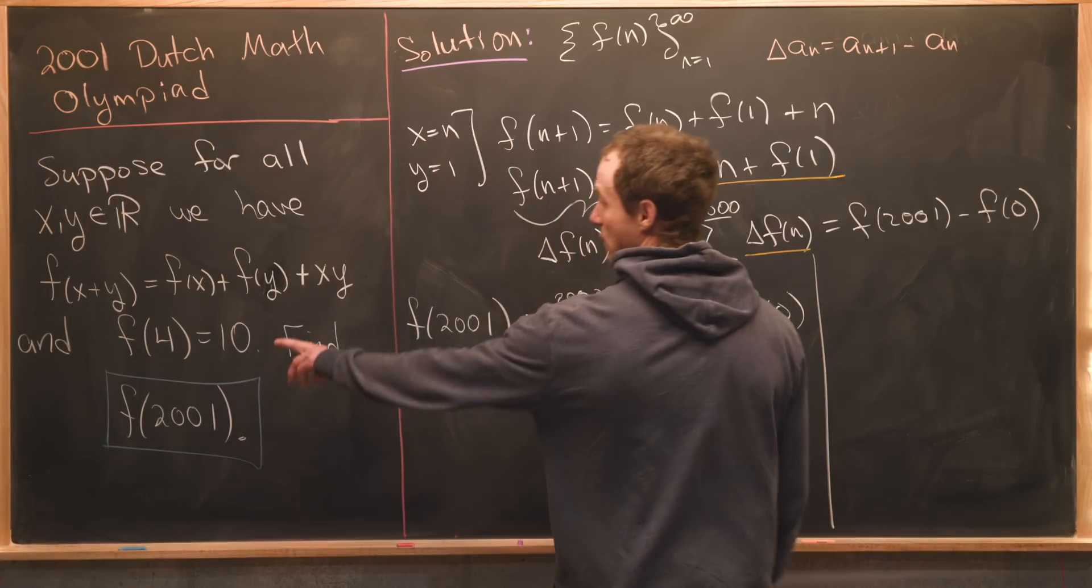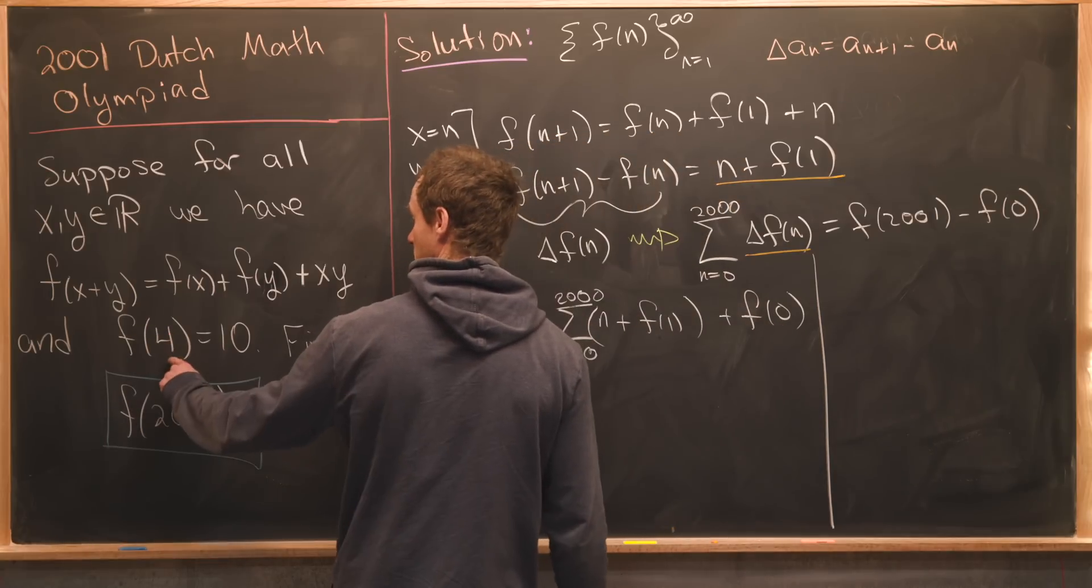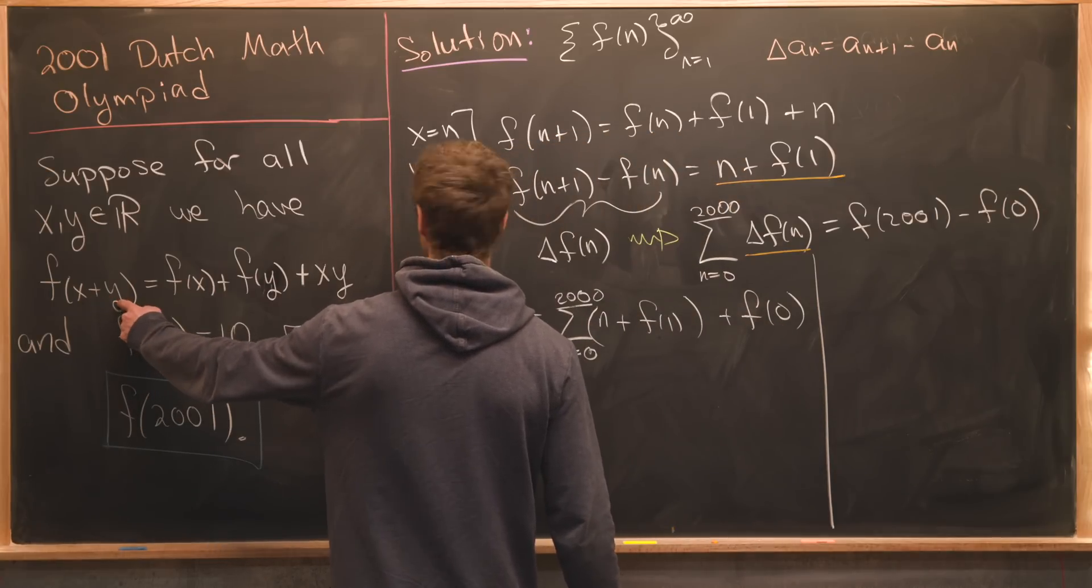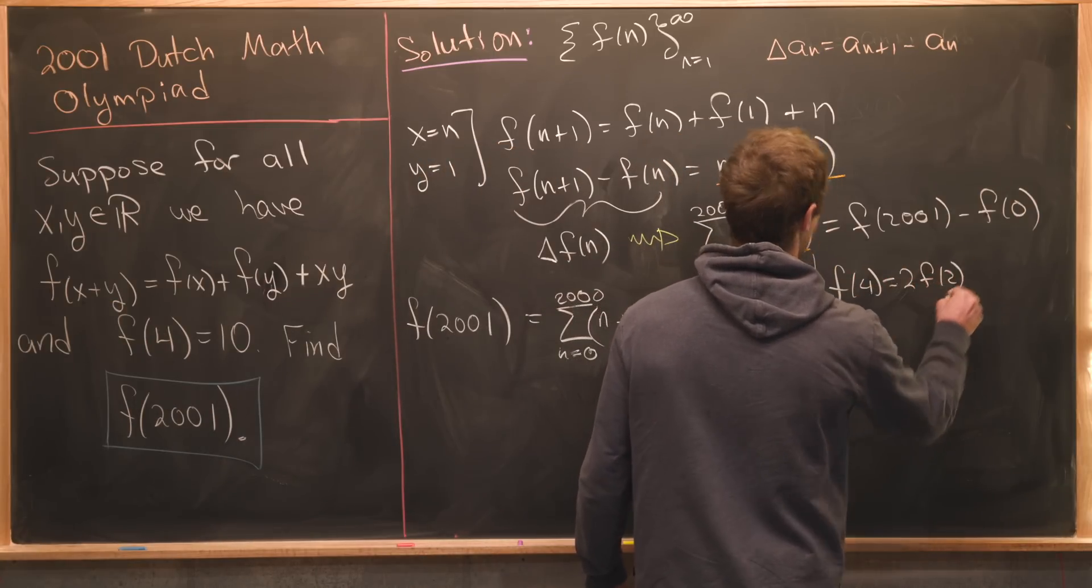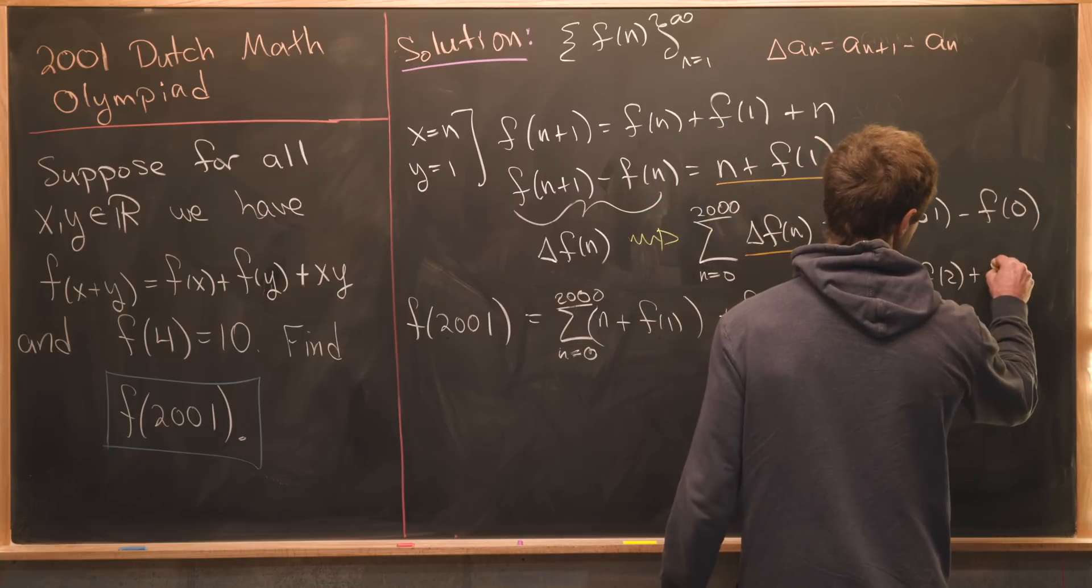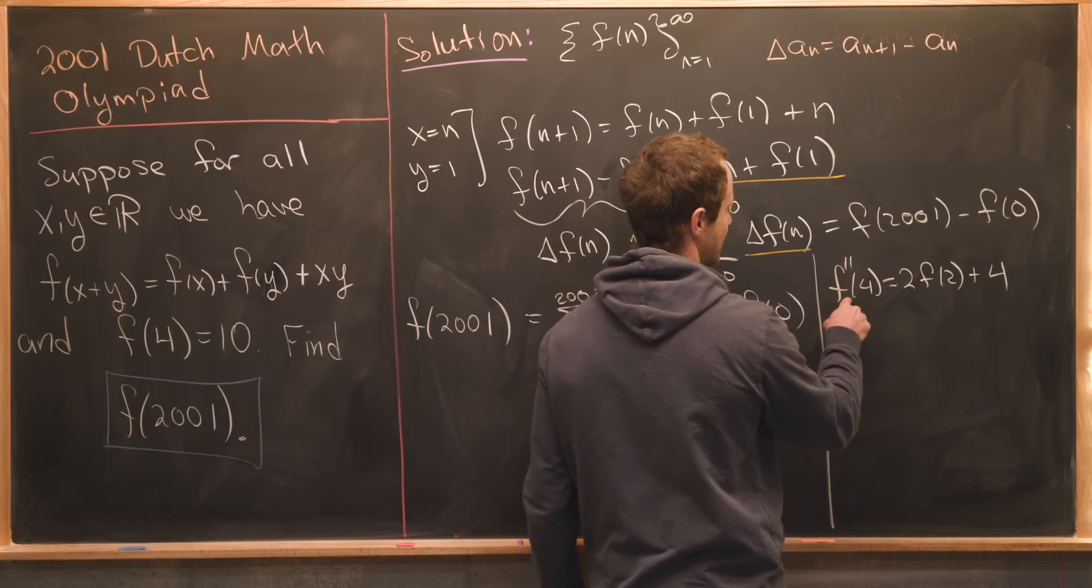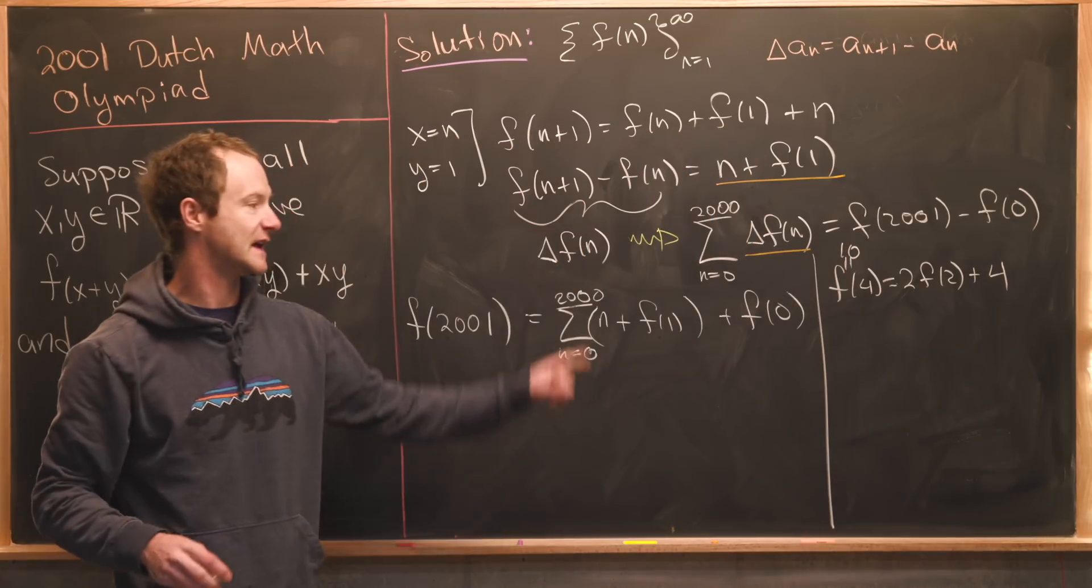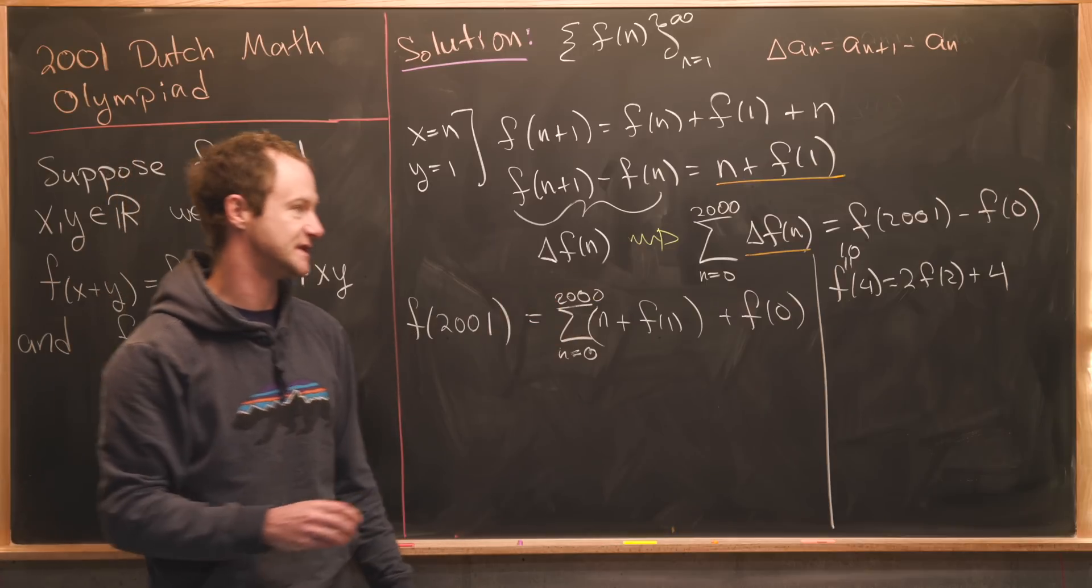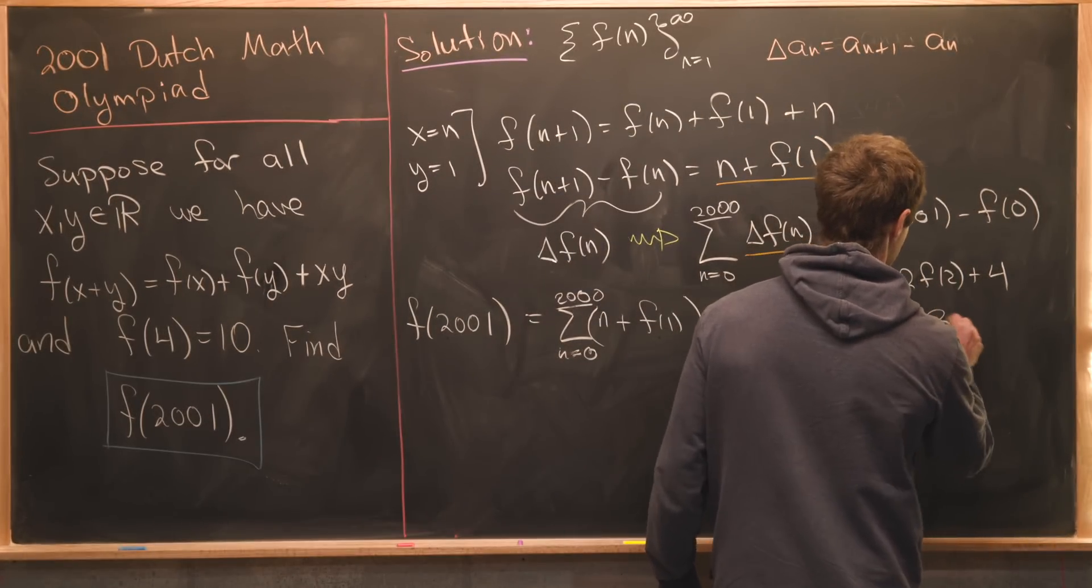First off we know f of 4 equals 10 but we also know that 4 equals 2 plus 2. So that tells us that f of 4 is equal to 2 times f of 2 plus 2 times 2 which is 4. Notice again f of 4 is equal to 10, so we can put a 10 here. That tells us that 2 times f of 2 is equal to 6. In other words f of 2 is equal to 3.